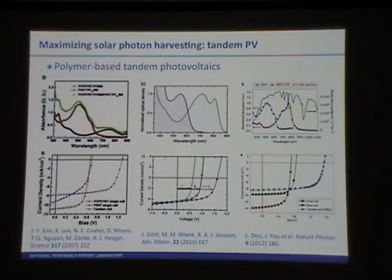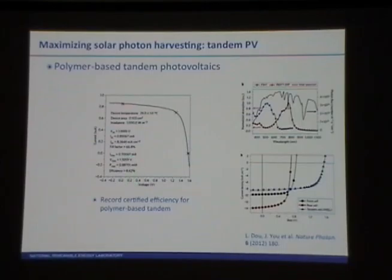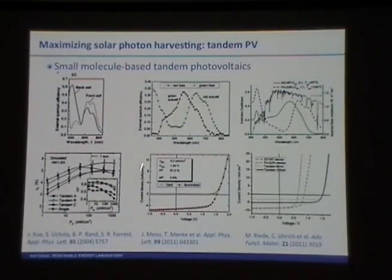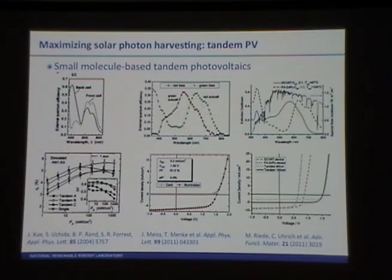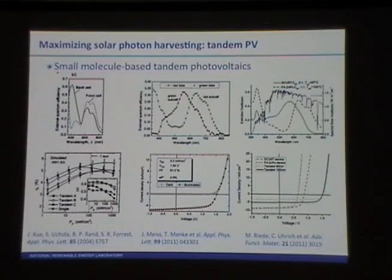Here are three examples of polymer-based tandem devices. This last example, at the time of this talk, was the record efficiency — though probably not anymore. As I mentioned, Maurice will talk in more detail about small molecule-based tandem devices. In all cases the approach is the same: generate complementary absorption spectra between materials, match the currents to get enhancement in the open circuit voltage without losing current from the individual devices. Small molecule-based tandems are now up around 10 percent.